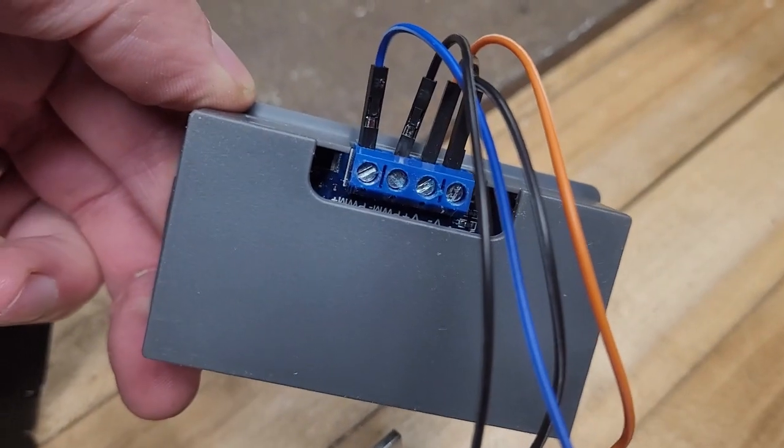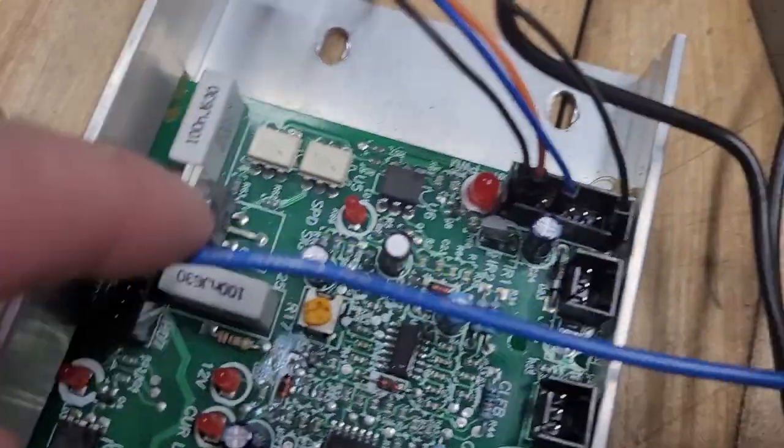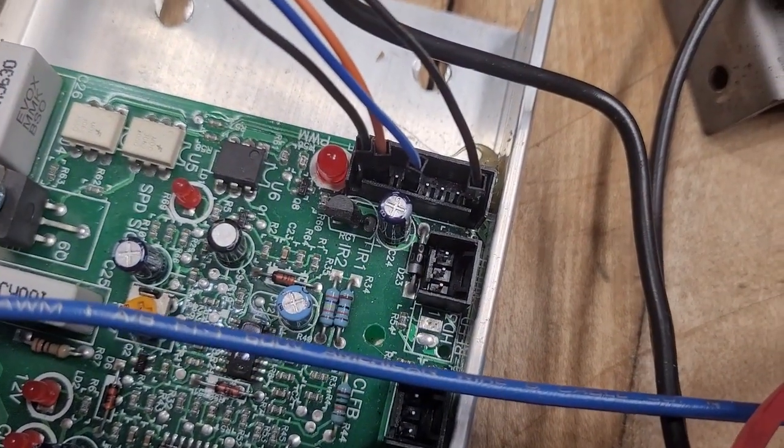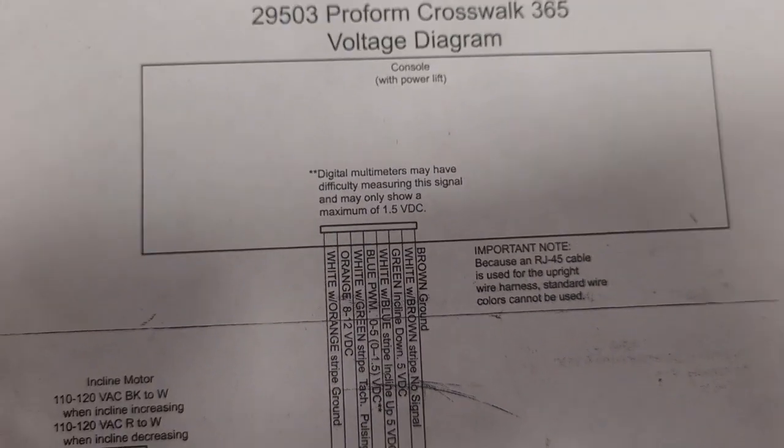If you look inside this unit, you can see that's the PWM plus. The blue wire goes down to the fourth pin, which matches up with the voltage diagram.